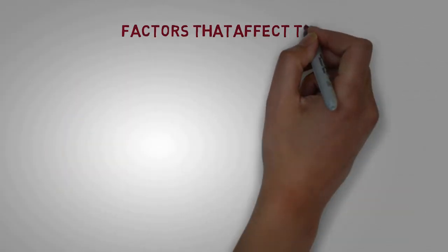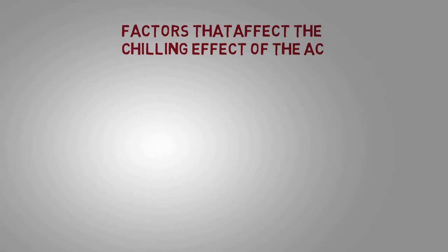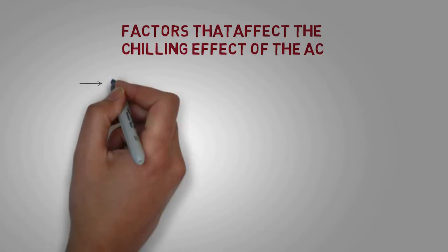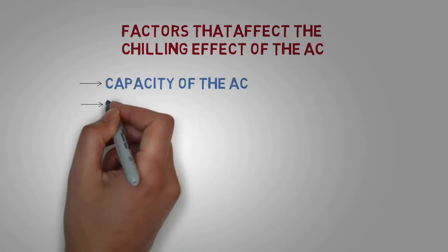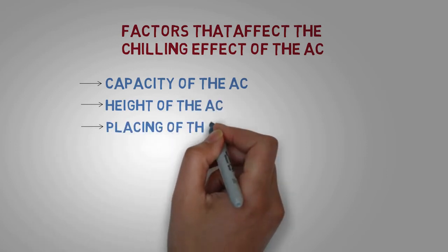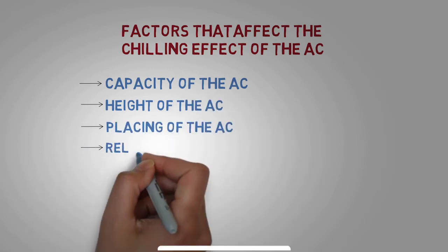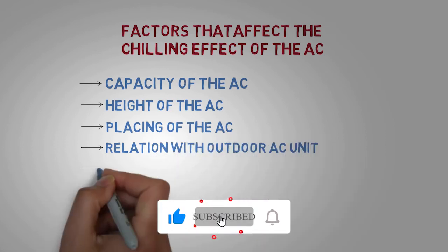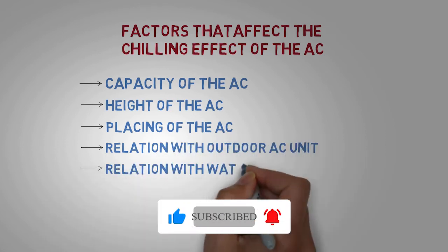Let us now see the factors that affect the chilling effect of the AC: Capacity of the AC, Height of the AC, Placing of the AC, Relation between indoor and outdoor AC unit, Relation with water drain.